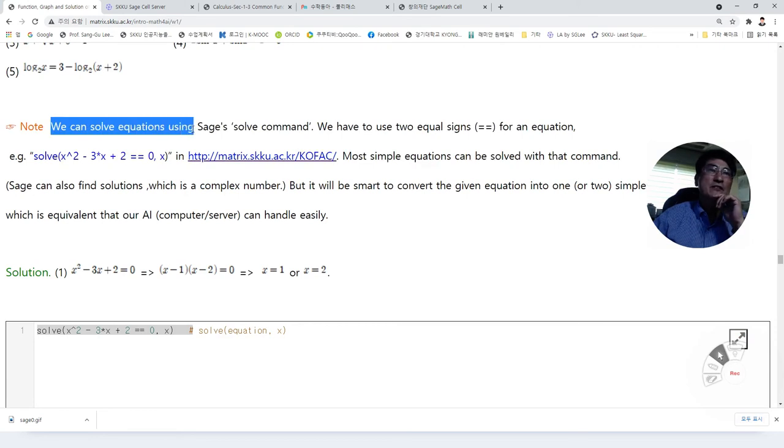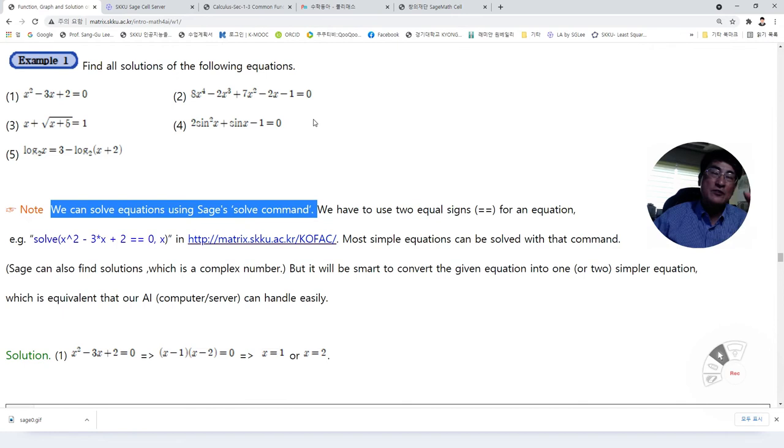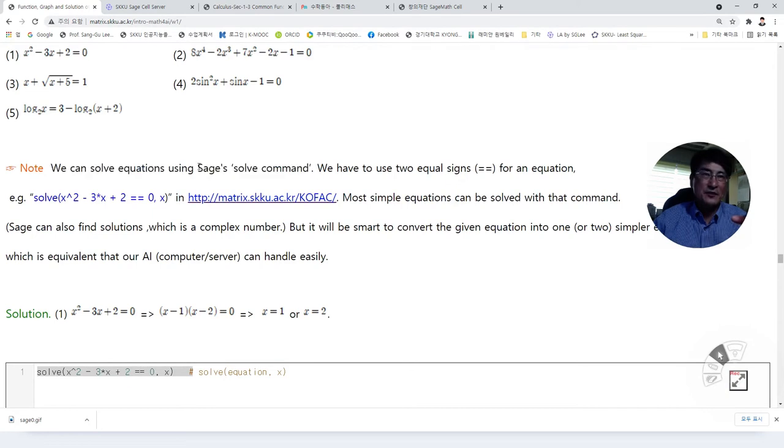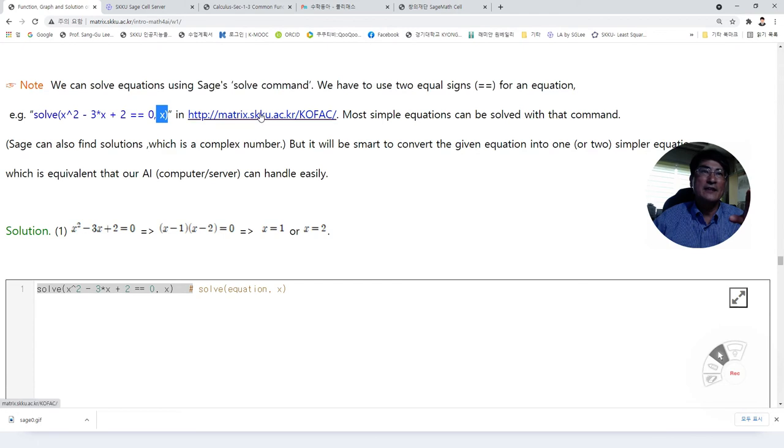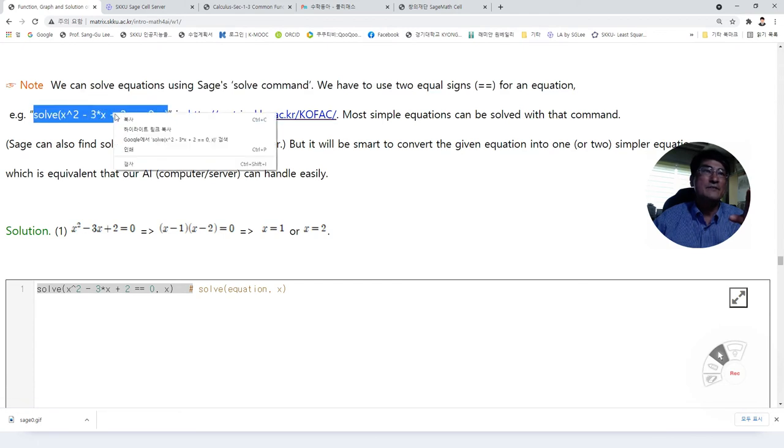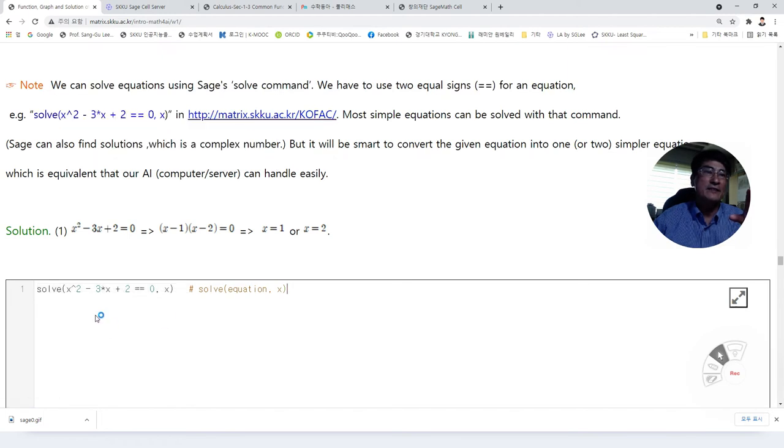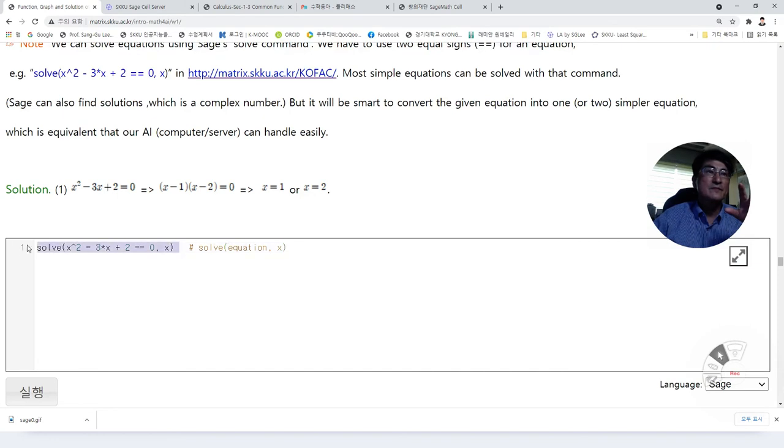Now, we can solve equations using Sage's solve command. We have to use two equal signs for an equation. For example, solve this is equal to zero with respect to x. Most simple equations can be solved with that command. Sage can also find solutions which is a complex number.